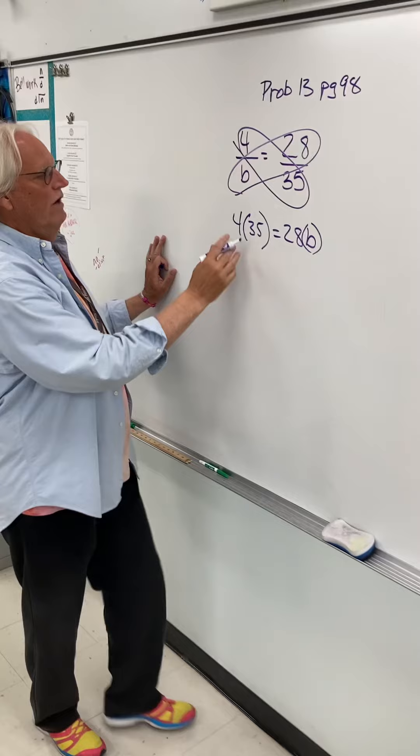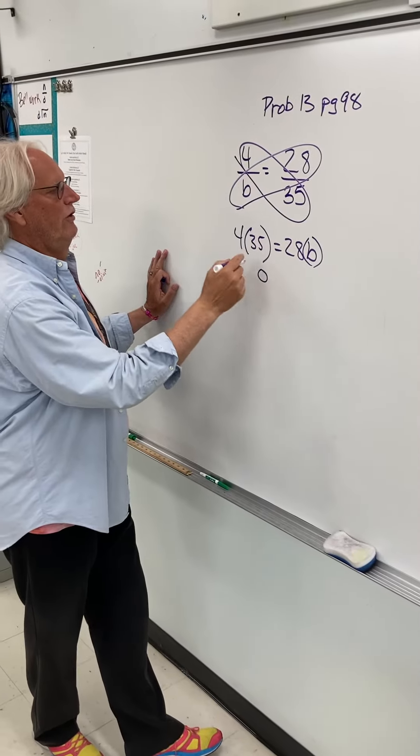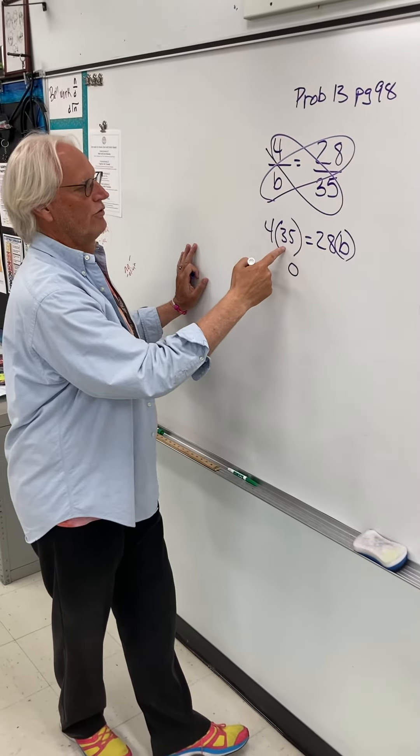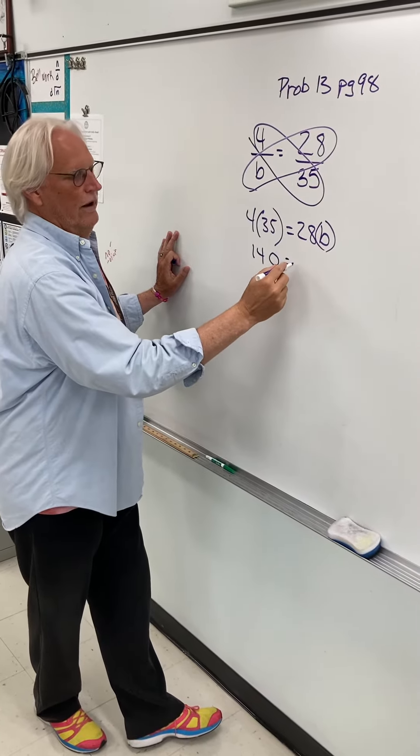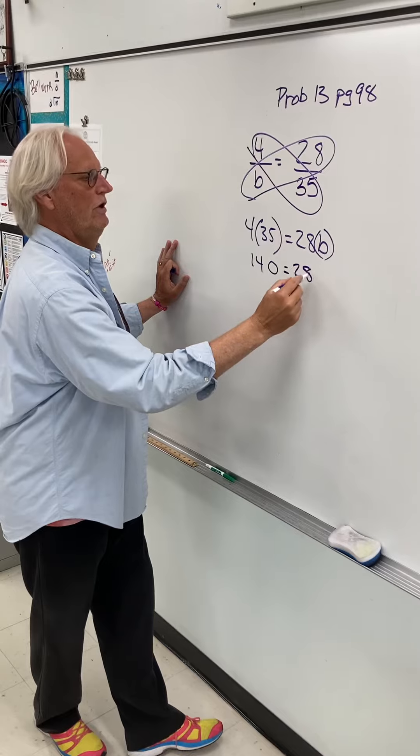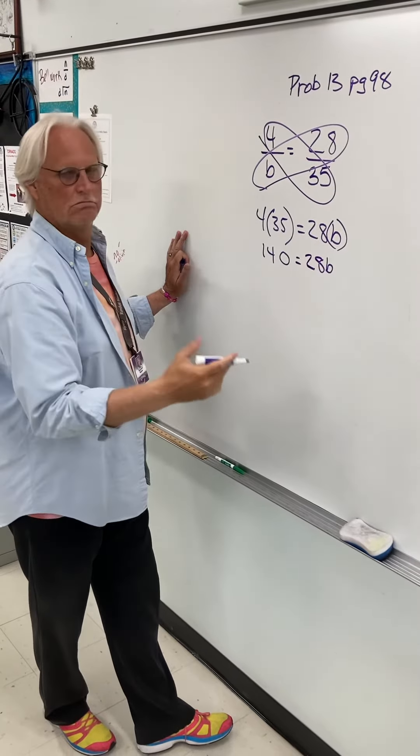So 4 times 35, 4 times 5 is 20, carry the 2. 4 times 3 is 12, plus 2 is 140. And then 28 times b is 28b. Pretty straightforward.